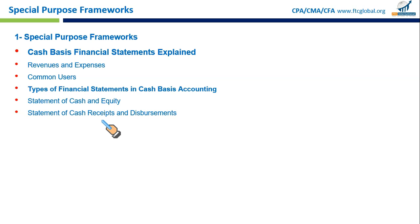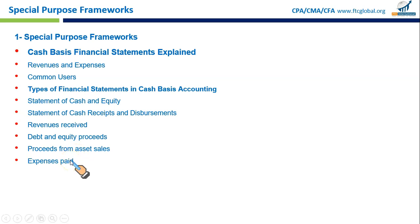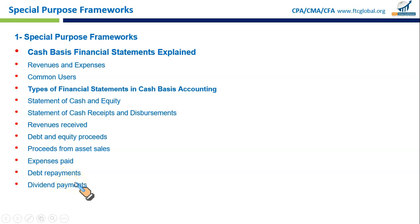Second is the Statement of Cash Receipts and Disbursements, which shows all cash coming in and going out during a period — like a cash book. It includes money received from sales or services, cash from loans or selling shares, proceeds from selling equipment or property, cash spent on operating expenses like rent, utilities, or salaries, debt repayments, dividend payments to shareholders, and cash spent on buying new assets such as equipment, vehicles, or computers.